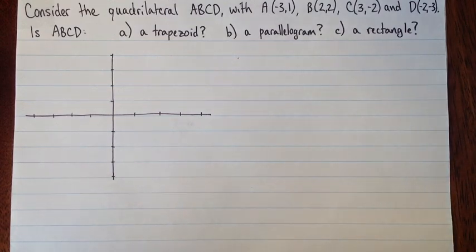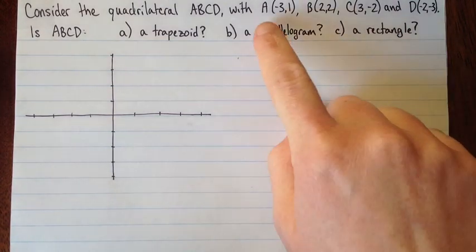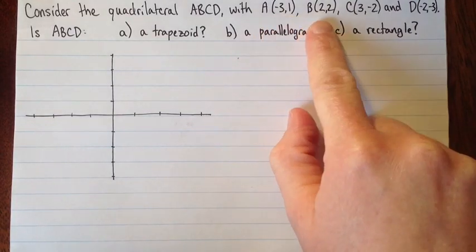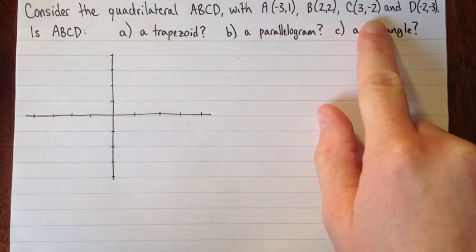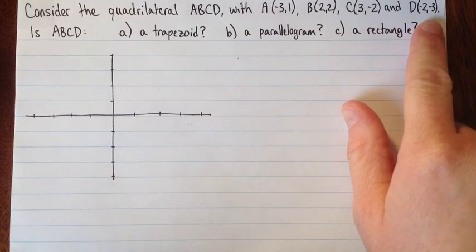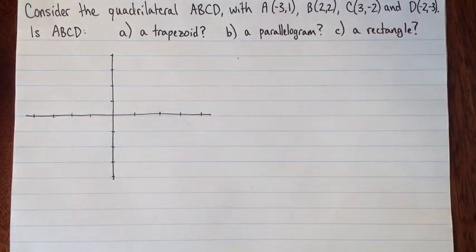Here's the question. Consider the quadrilateral ABCD with A(3,1), B(2,2), C(3,-2), and D(-2,-3). Is ABCD a trapezoid, a parallelogram, or a rectangle?